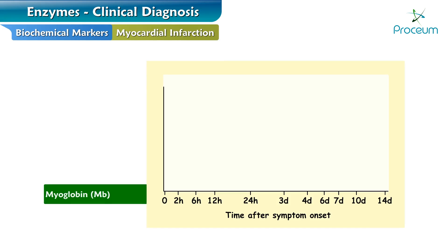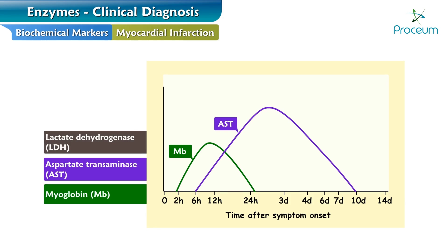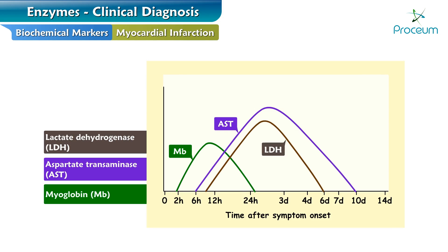The first historical marker is myoglobin. It appears in plasma 2-3 hours after cellular injury or chest pain, peaks at 6-12 hours, and returns to baseline by 1-2 days. The second is aspartate transaminase, or AST. This appears in plasma 6-8 hours after cell injury, peaks at about 2-3 days, and returns to normal by 7-10 days. The third is lactate dehydrogenase, or LDH, which appears in plasma 6-8 hours after cell injury and returns to normal by 4-6 days.